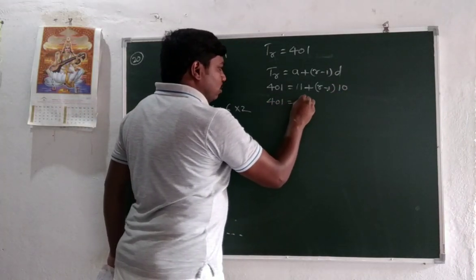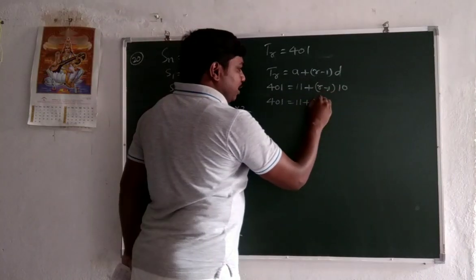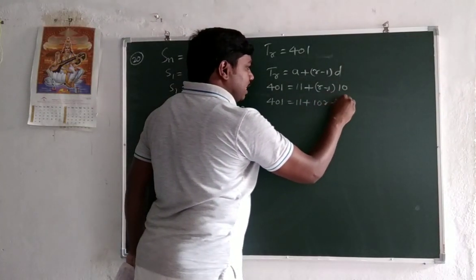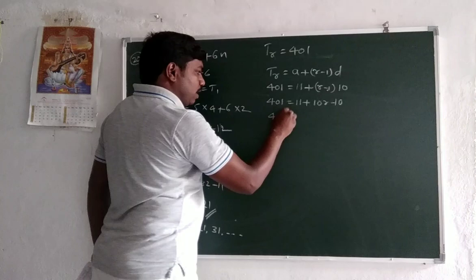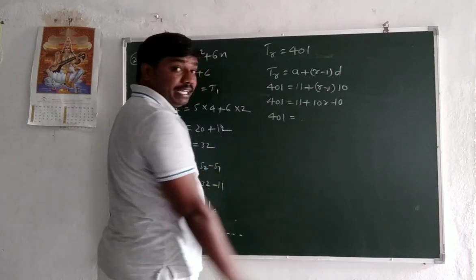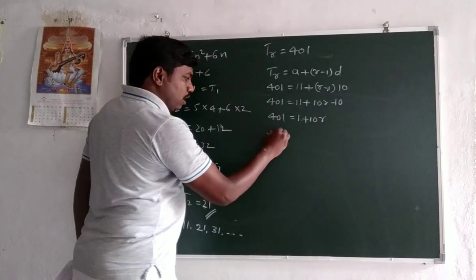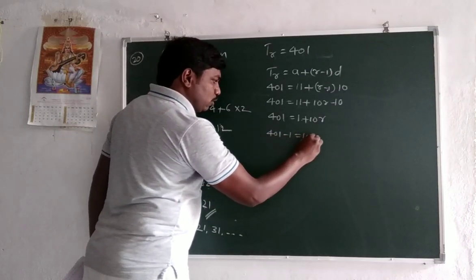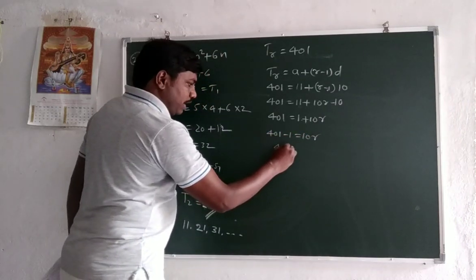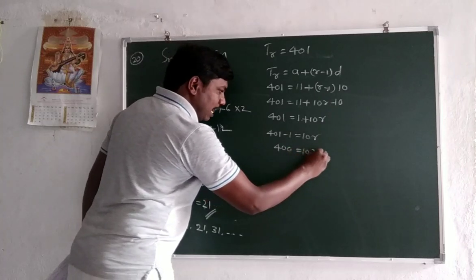So 401 is equal to 11 plus (r-1) × 10, which is 10r minus 10. So 401 is equal to 11 minus 10, which is 1 plus 10r. 401 minus 1 is equal to 10r. So 400 is equal to 10 times r.